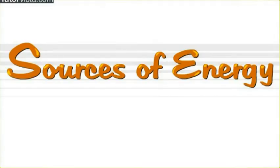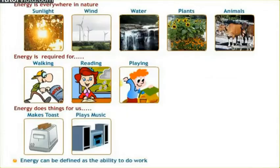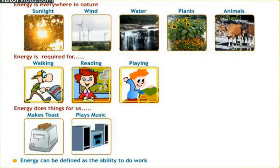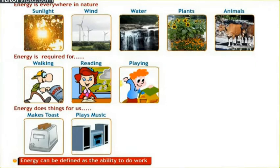Sources of Energy. What is energy? Energy is everywhere in nature. Energy is present in sunlight, wind, water, plants and in animals. We need energy to do all activities. Energy does things for us. Thus, energy can be defined as the ability to do work.